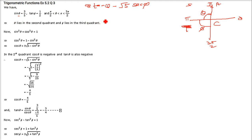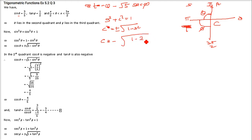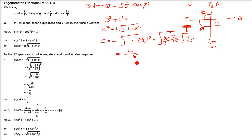Sin θ = 3/5 is given. Cos θ = -√(1 - (3/5)²) = -√(16/25) = -4/5 (negative in second quadrant). Tan θ = sin θ / cos θ = (3/5) / (-4/5) = -3/4.